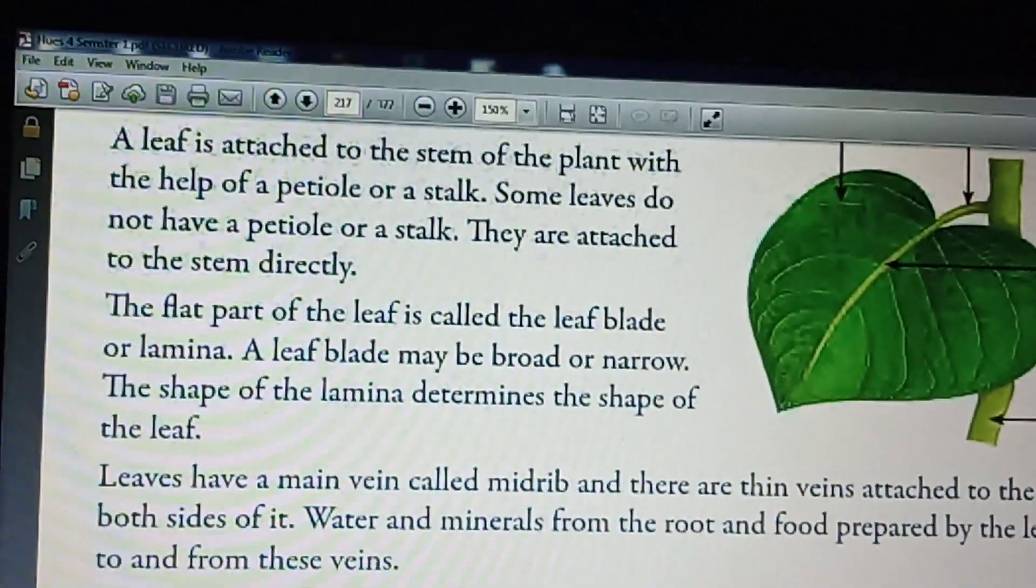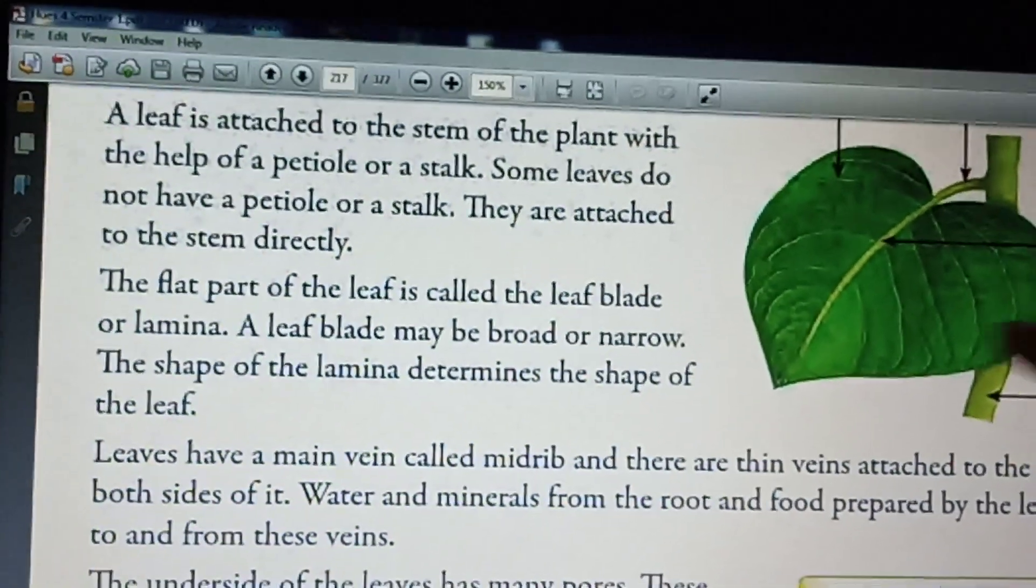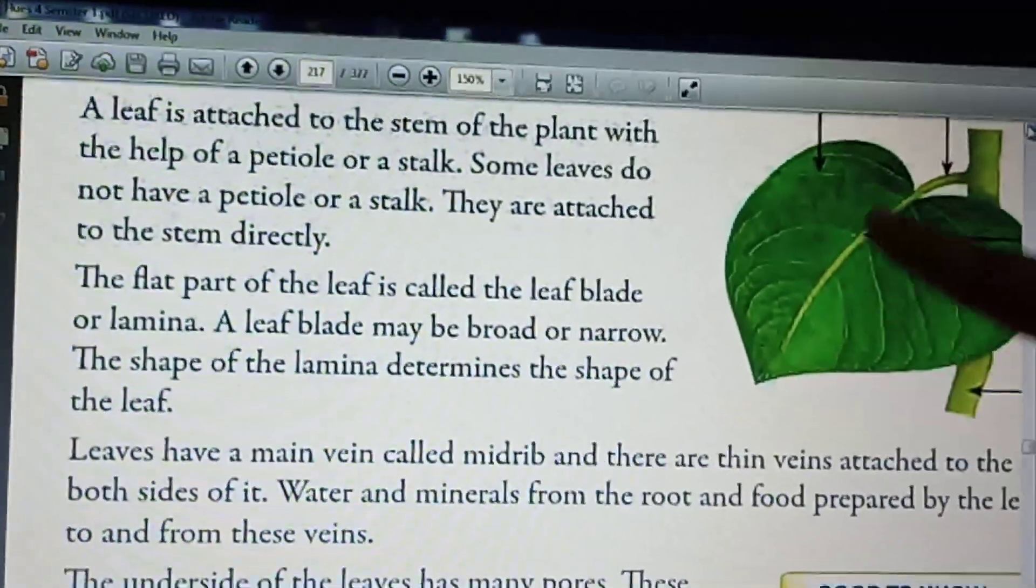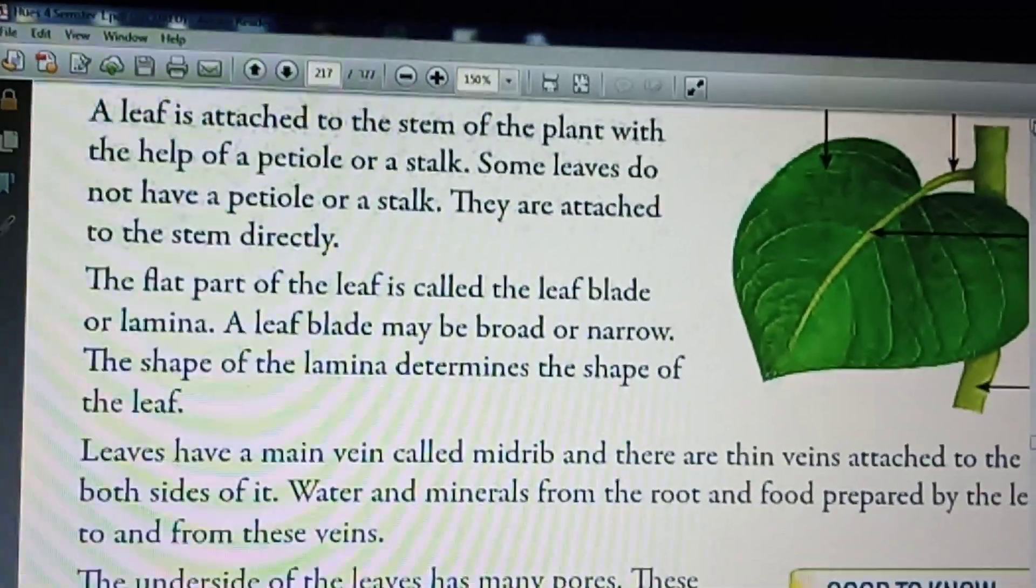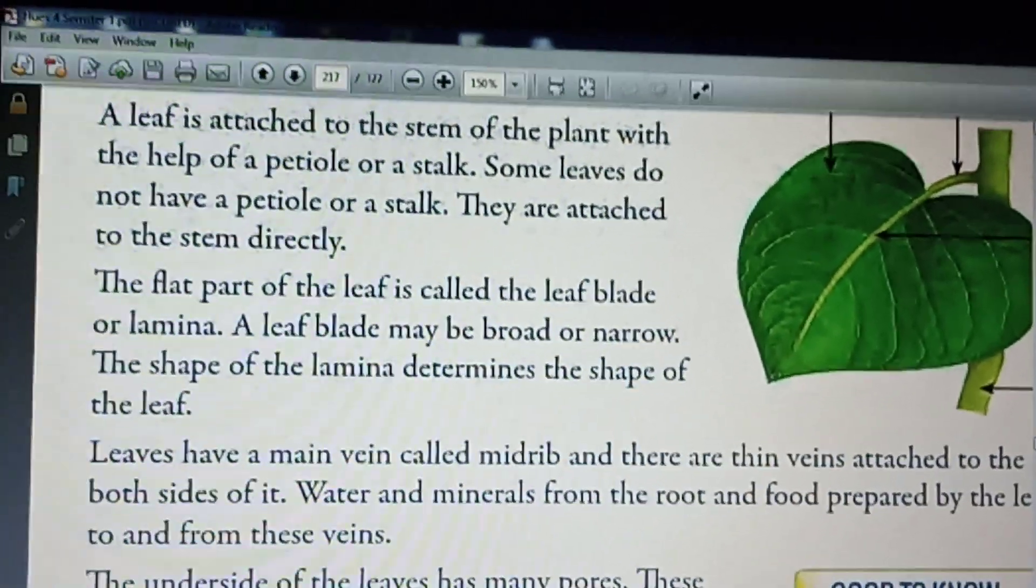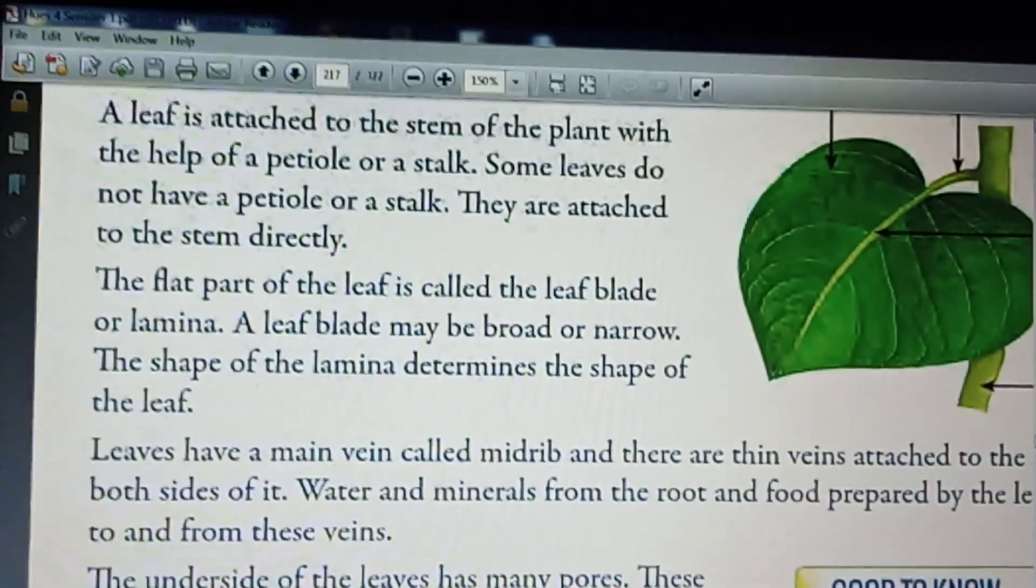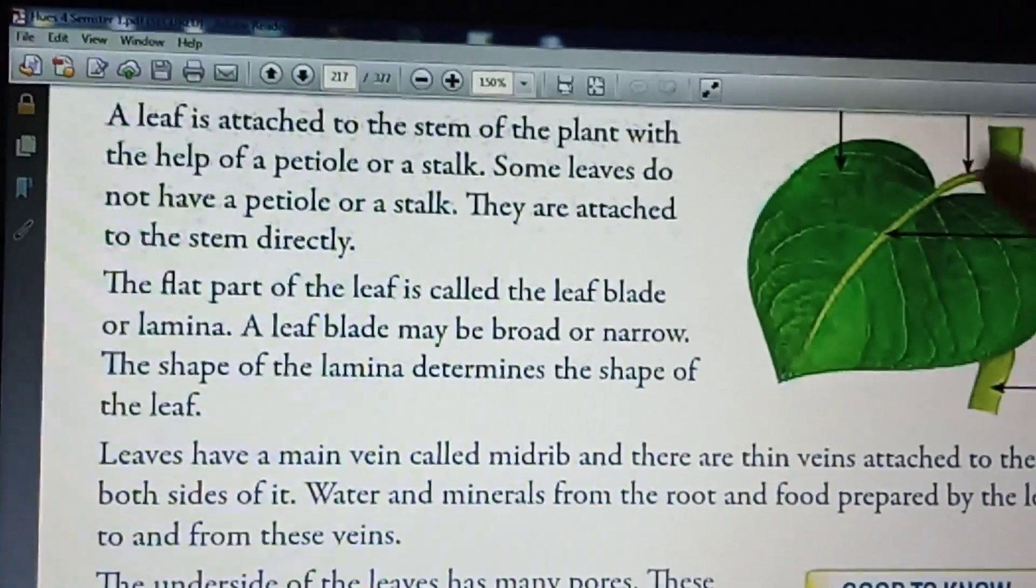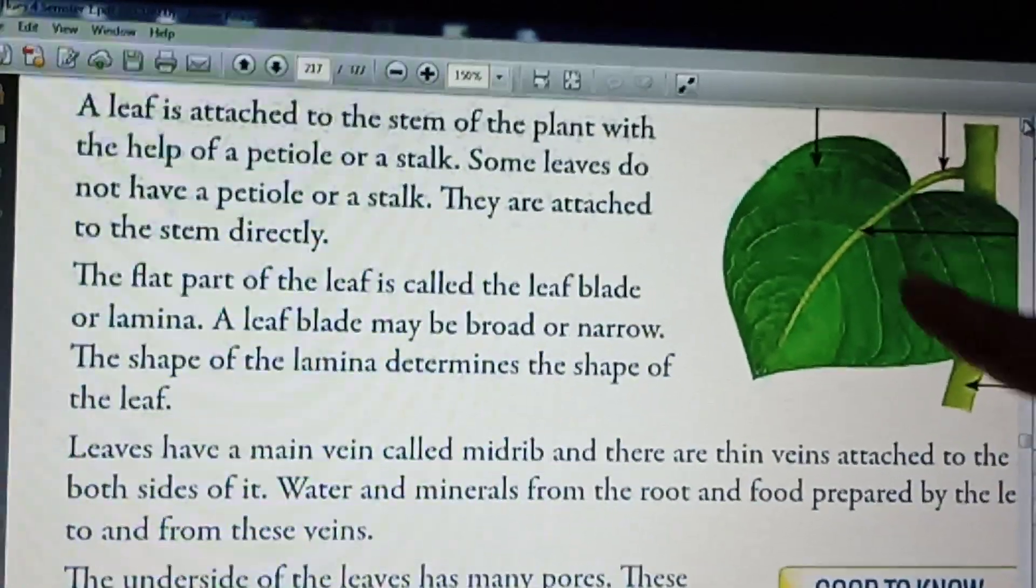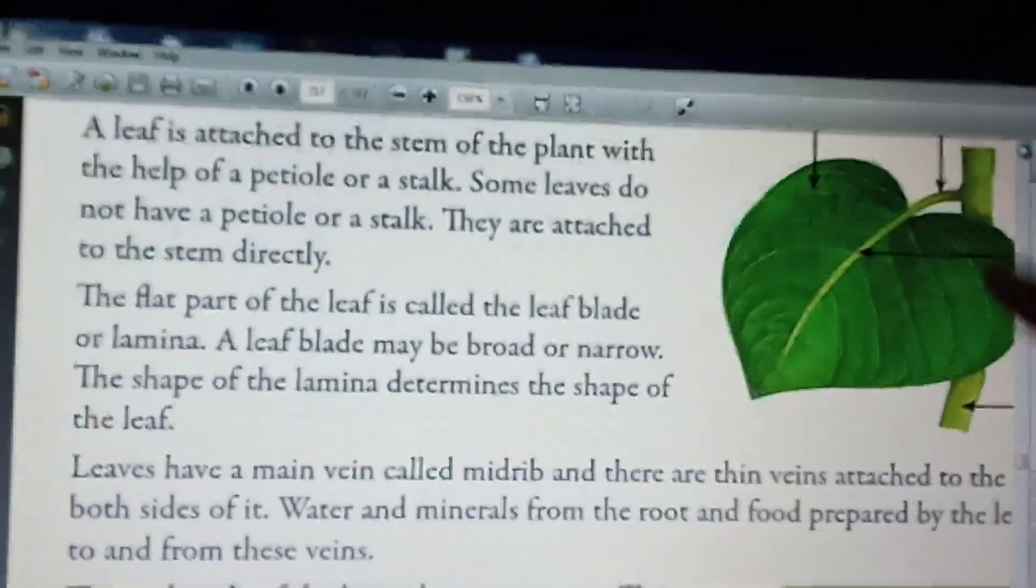Leaves have a main vein called midrib. This one is the main vein of the leaf and it is known as midrib. And there are thin veins attached to both sides of it. These are the thin veins which are attached to the main veins. These are called veins of the leaf.